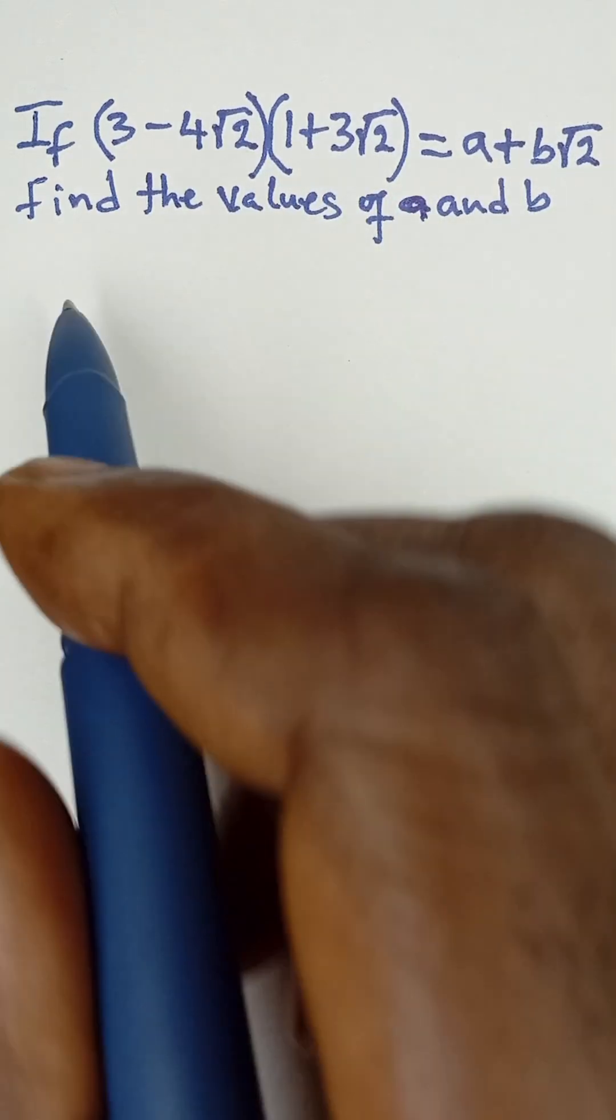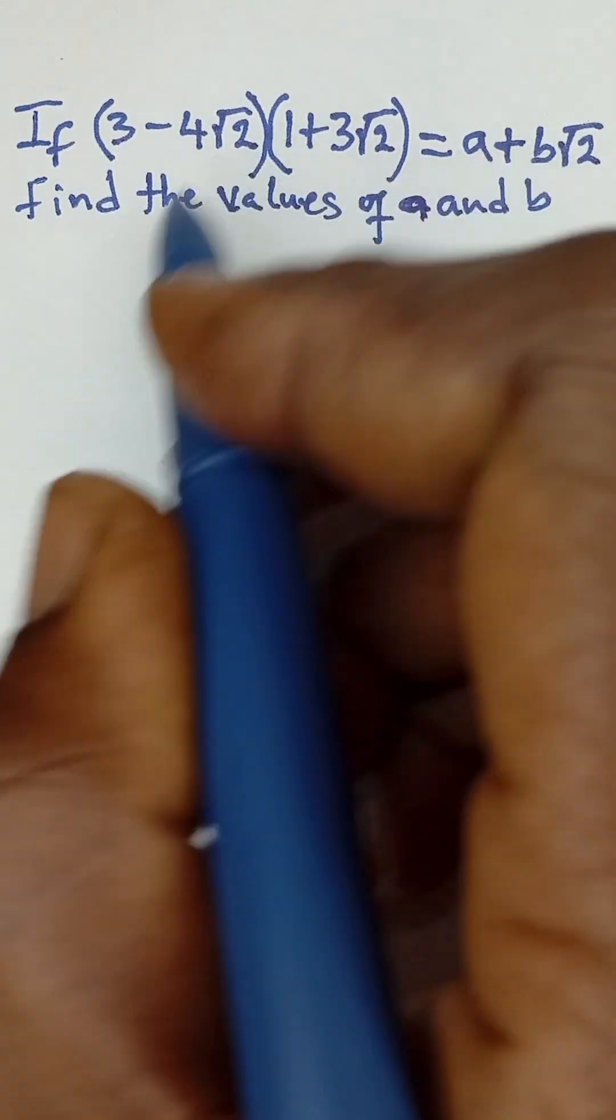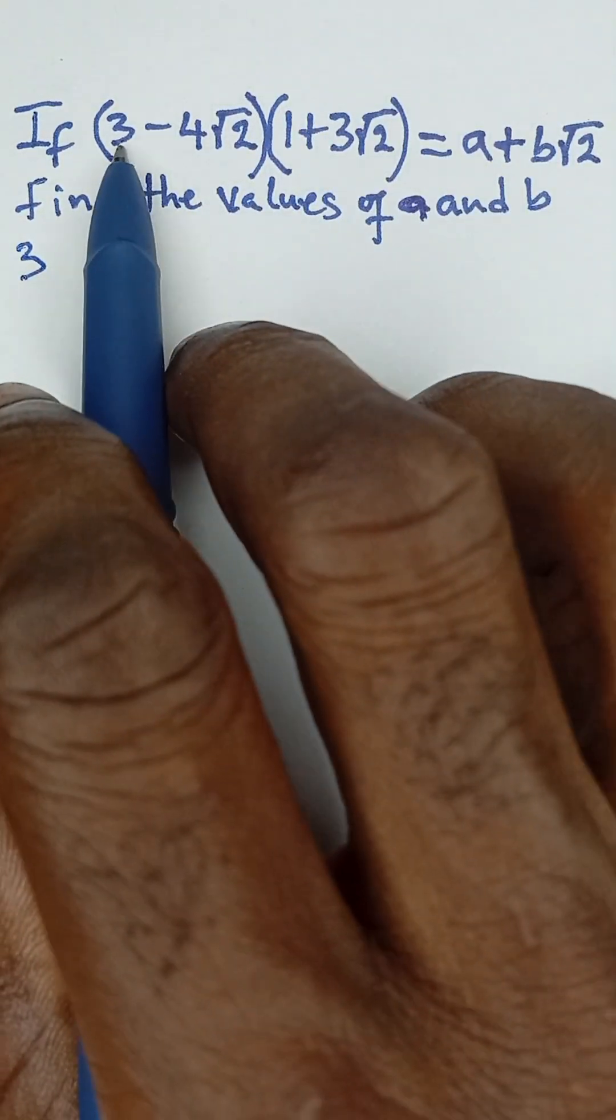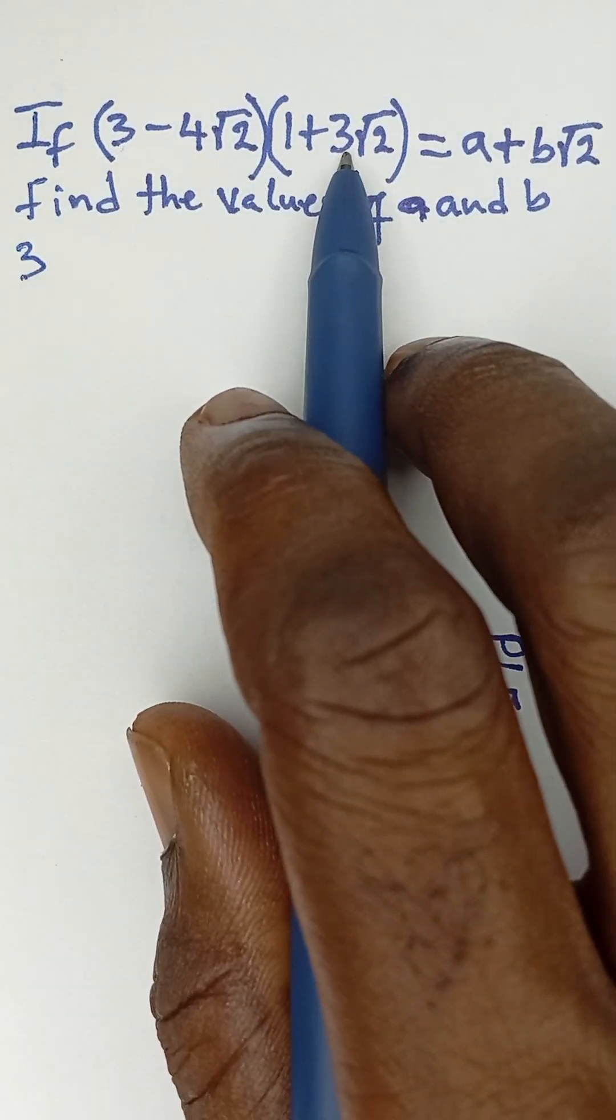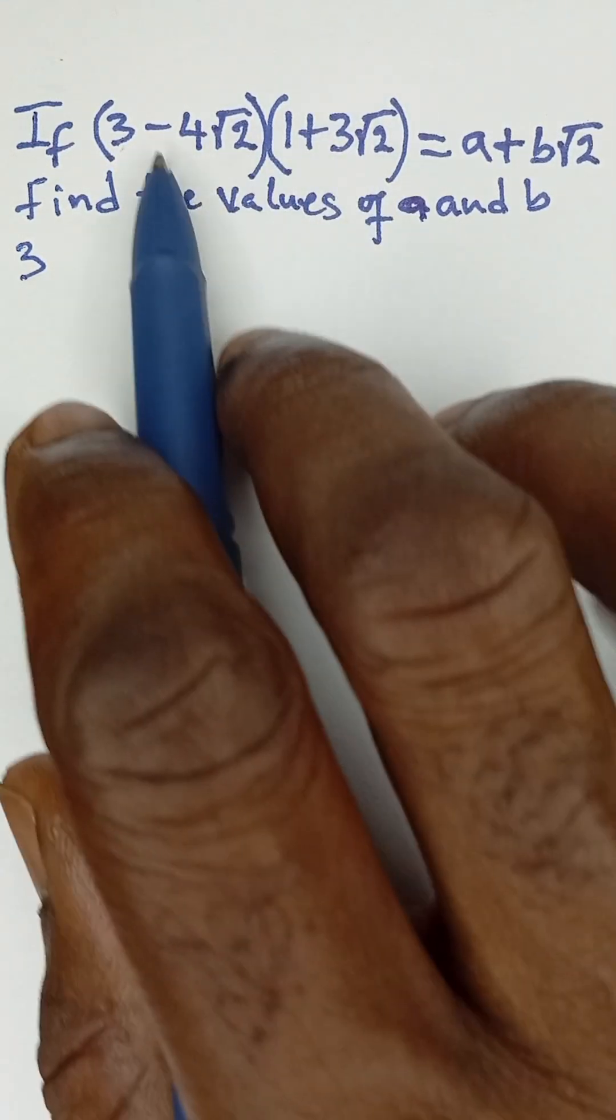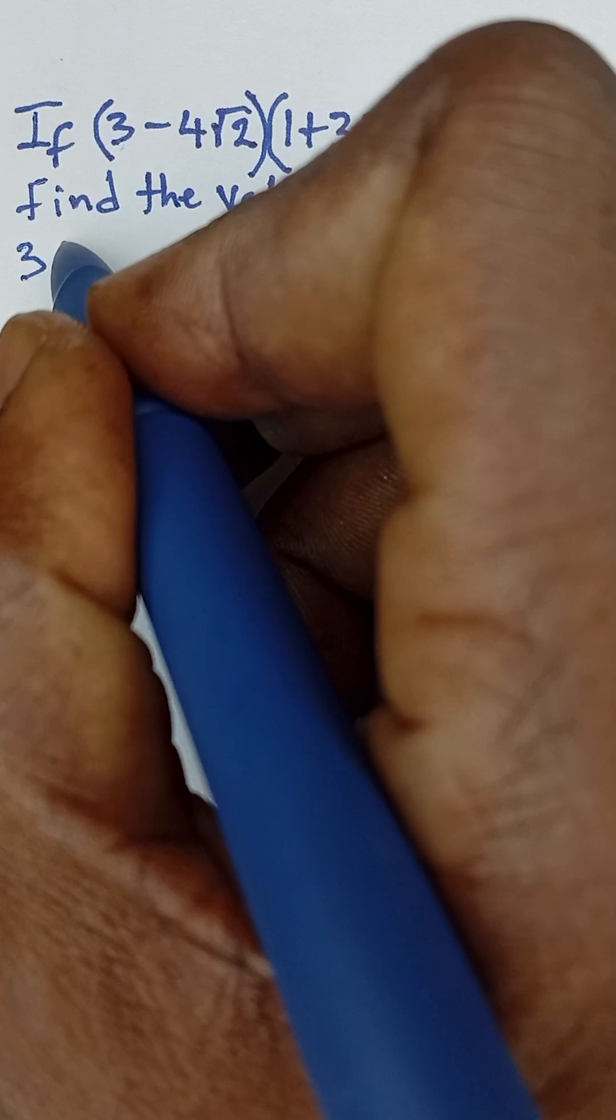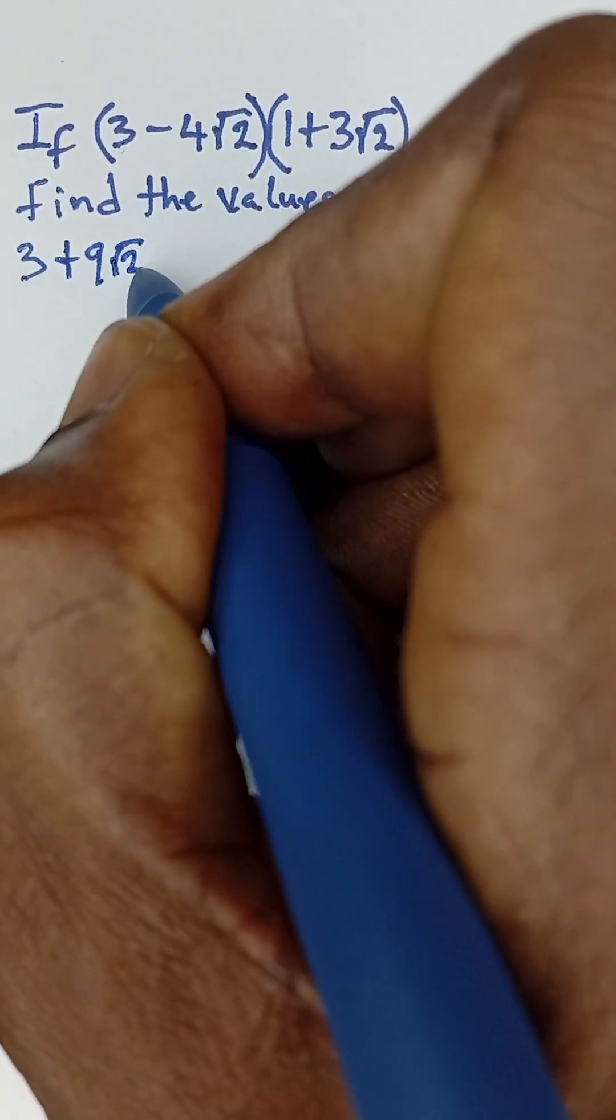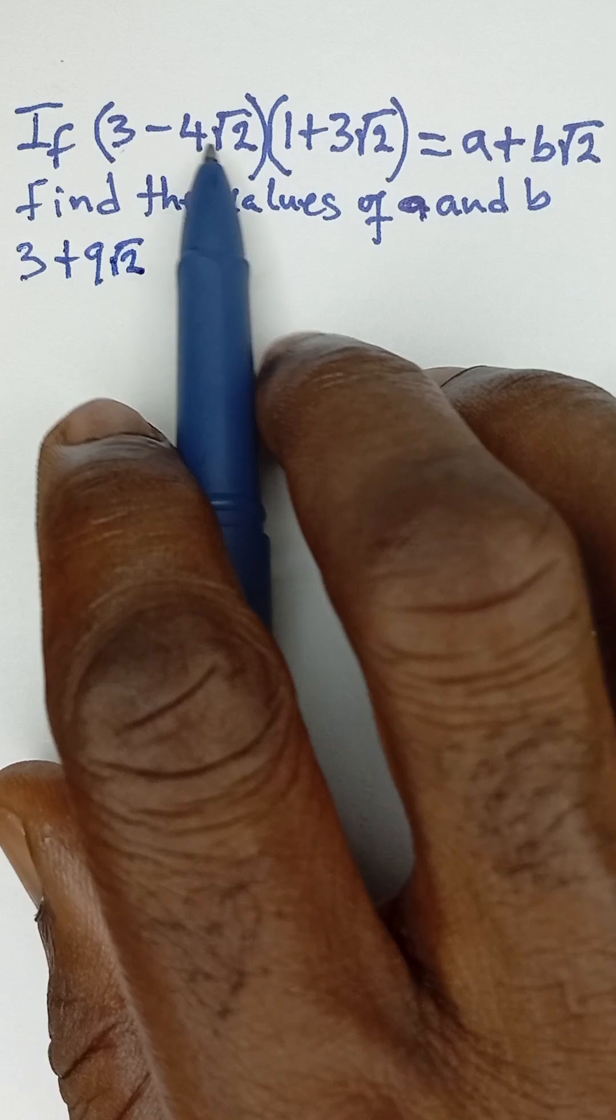So 3 multiplied by 1 is 3. Then 3 multiplied by 3√2, the 3 will multiply 3 and then we have the √2. That will give us 3 times 3 is 9, so it will be positive 9√2. And then -4√2 multiplied by 1 will remain -4√2.